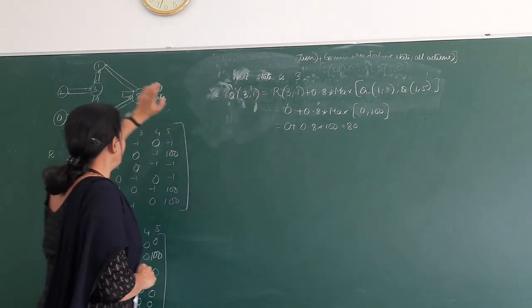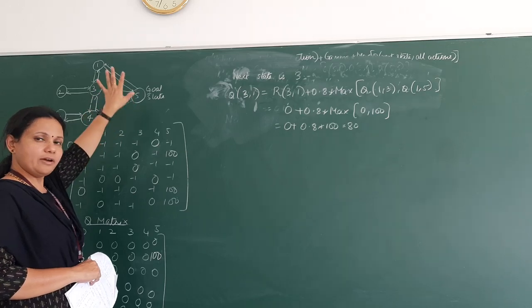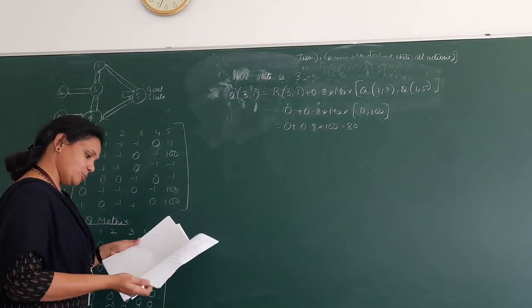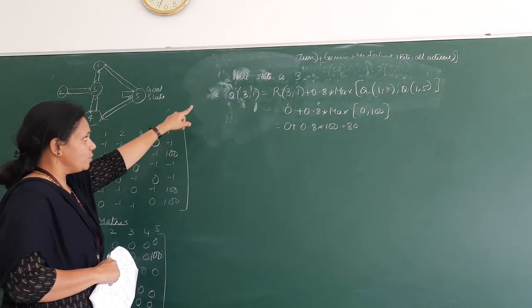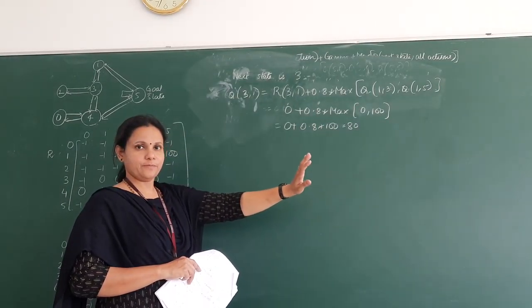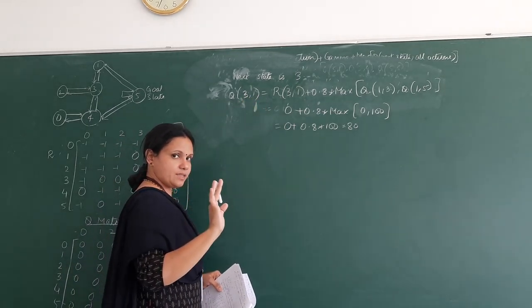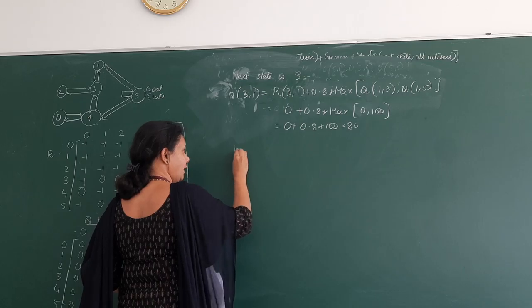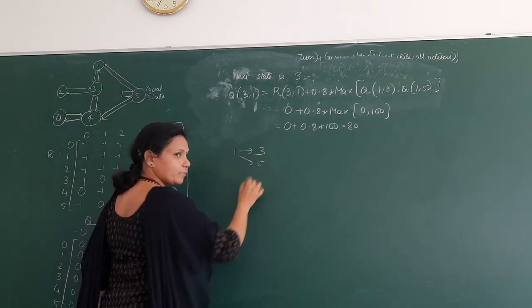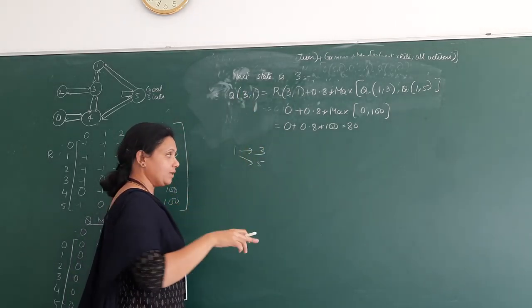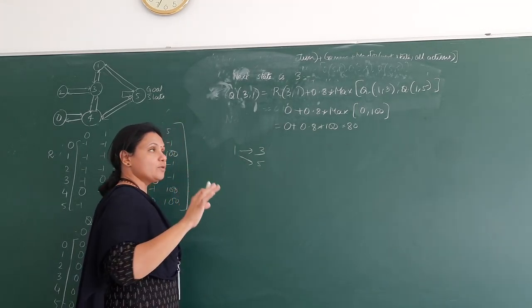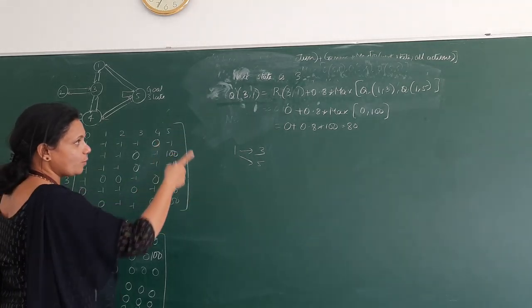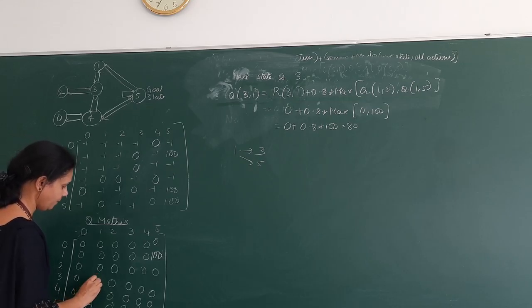Now I have reached state 1. From 1 again I can come back to state 5 or state 3. We have already computed Q(1,5) = 100, so we have reached the goal state again. I hope you are understanding. I have taken Q(3,1) as my current state-action pair — 3 is the current state, action is going to next state 1. From 1 I can go to 5 or to 3, but we won't go back on the path. So once I complete this I have reached the goal state. We will update the Q matrix: Q(3,1) = 80.